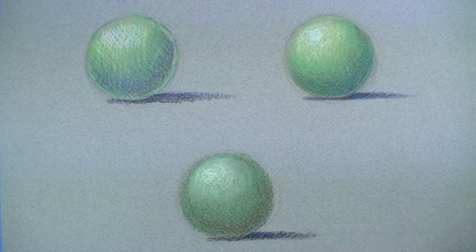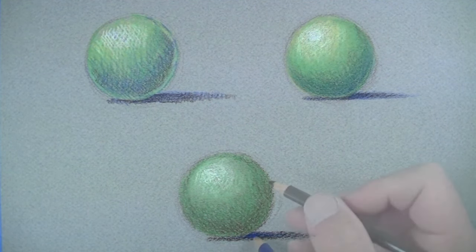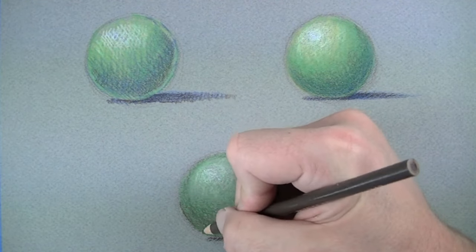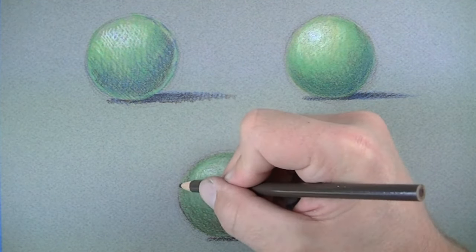We'll establish the highlight here by layering white over the top of the local color. Next, we can address the shadow and make the cast shadow a little bit darker by layering blue over the top of the brown. We can also clean up the edges with a sharp dark brown pencil if we choose to do so.